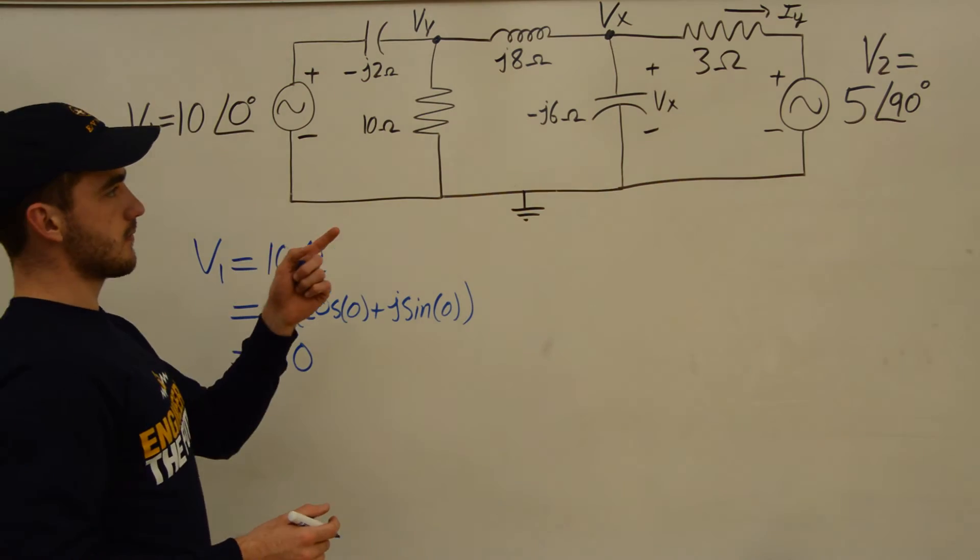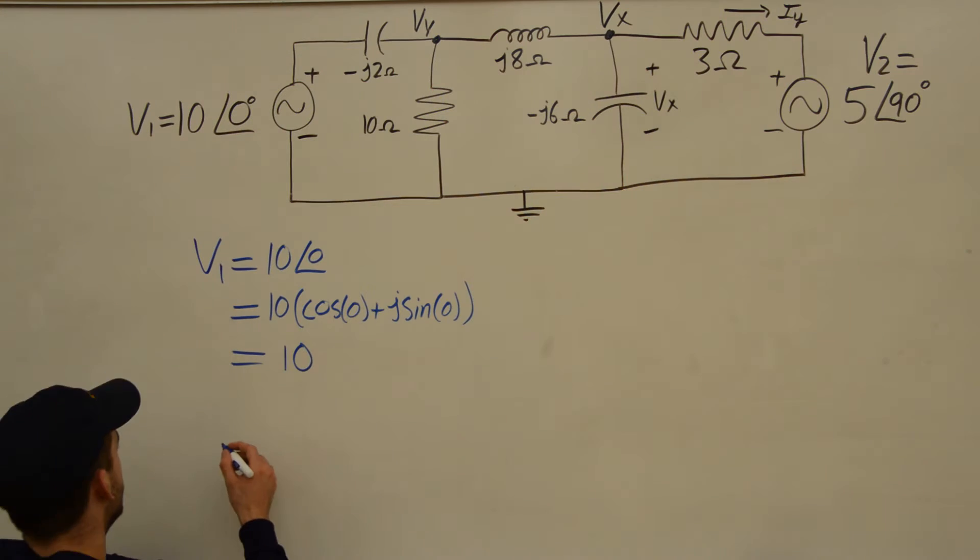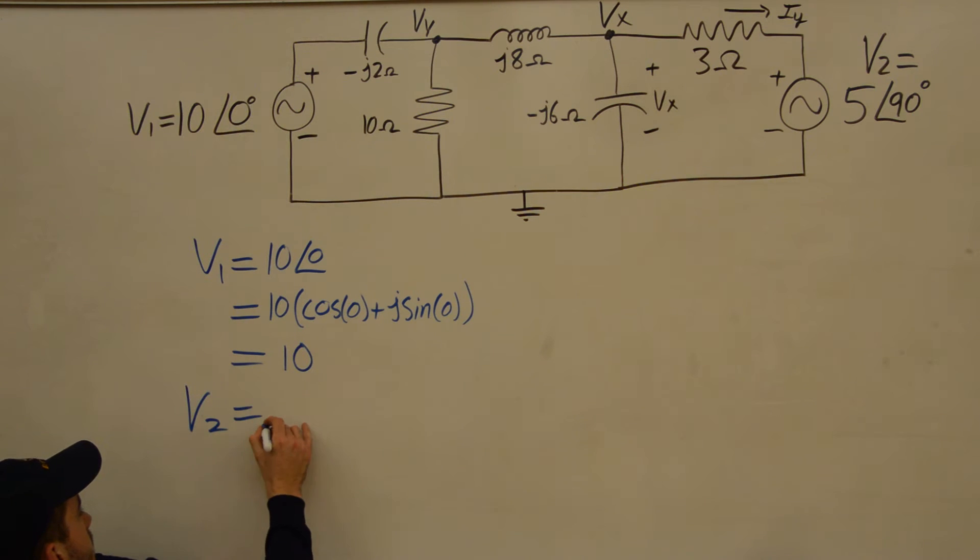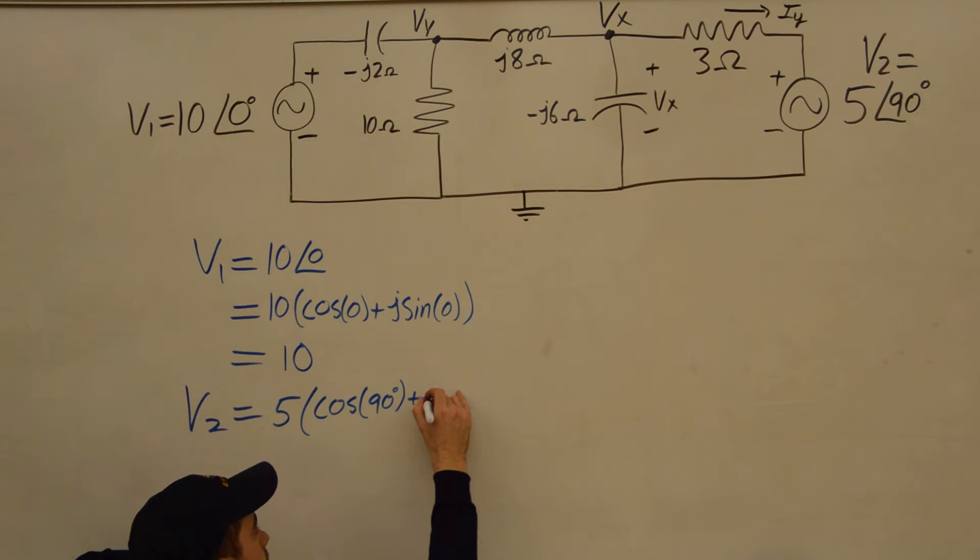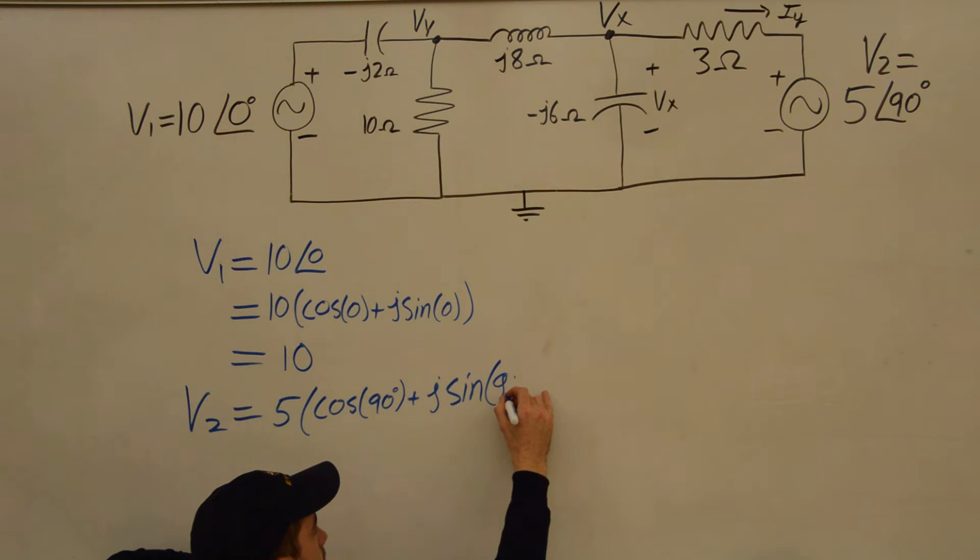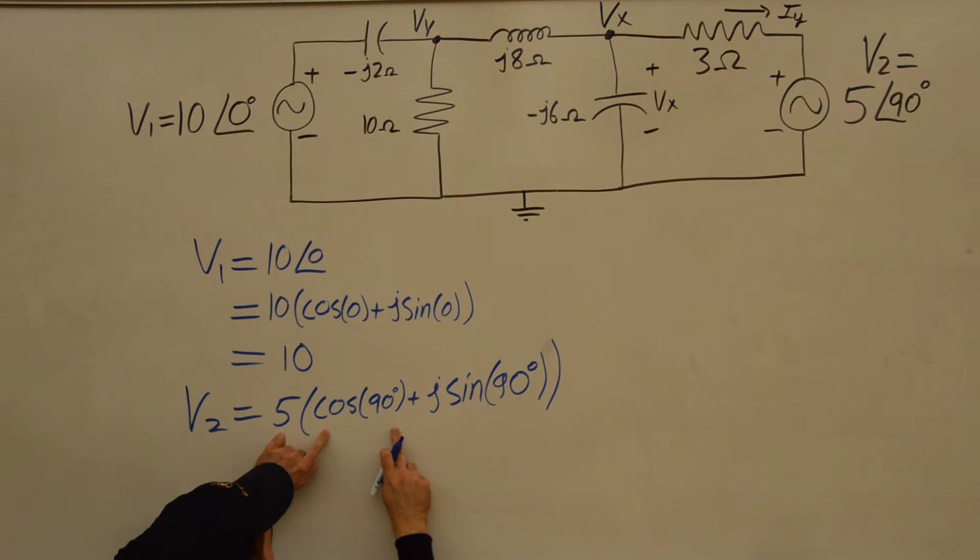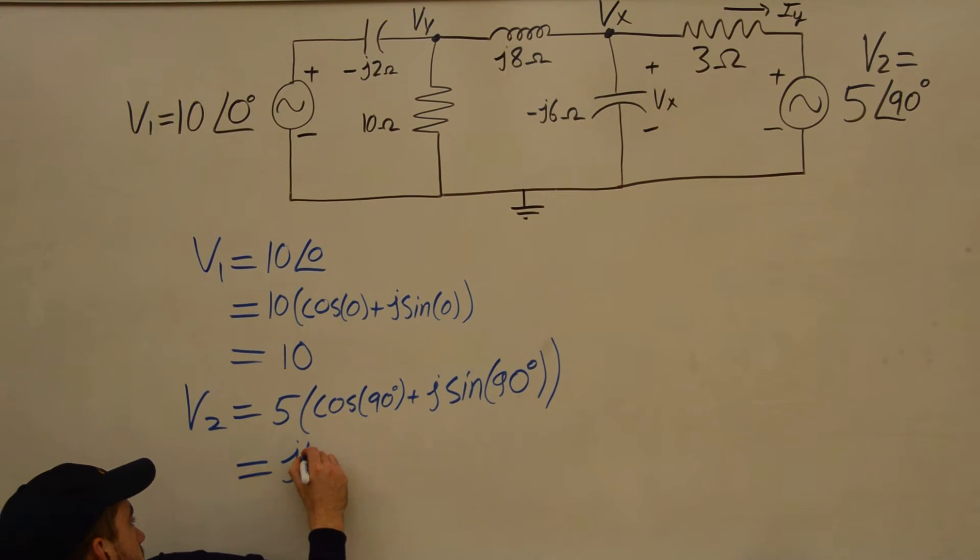And now we look at V2. V2 is 5 with a phase shift of 90. So we'll have V2 equals 5. And then with a phase shift of 90, we're going to have cosine of 90 degrees, plus J sine of 90, that's a 9, not a G, 90 degrees. So cosine of 90 is 0, sine of 90 is 1, so we're going to have 5 times J. So V2 equals J5.